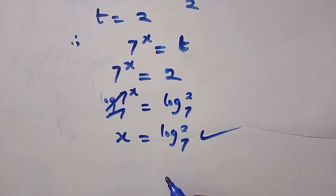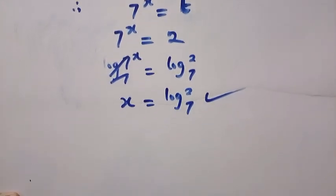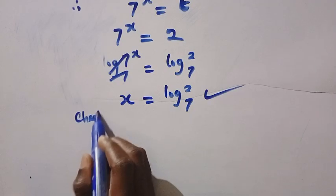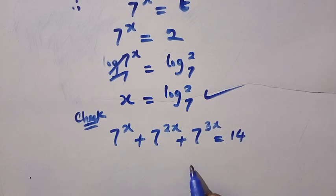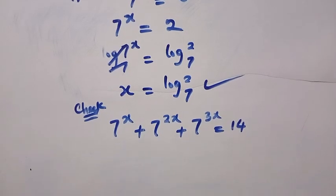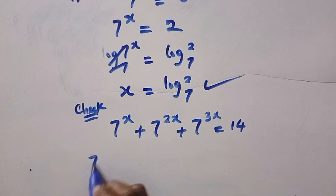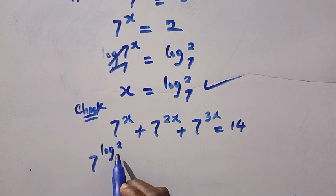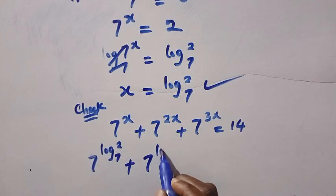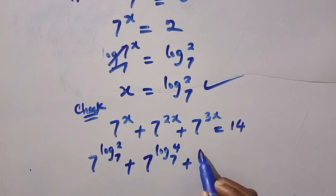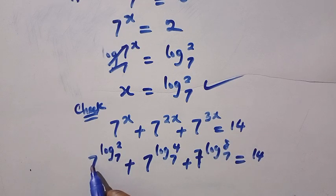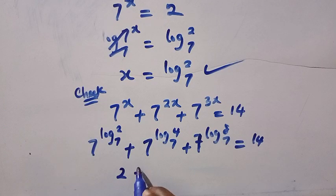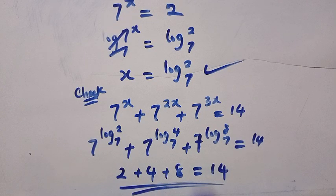Here is the real root for this equation. We can also check for the complex root. Let's see how we can verify this equation. To check, we have 7^x + 7^(2x) + 7^(3x) = 14. Anywhere we see x, we replace it with log₇(2). We have 7^(log₇(2)) + 7^(log₇(2²)) + 7^(log₇(8)) = 14. The logarithm of this base the same with the power will be taking only these values. We have 2 + 4 + 8 = 14. The left-hand side equals the right-hand side.